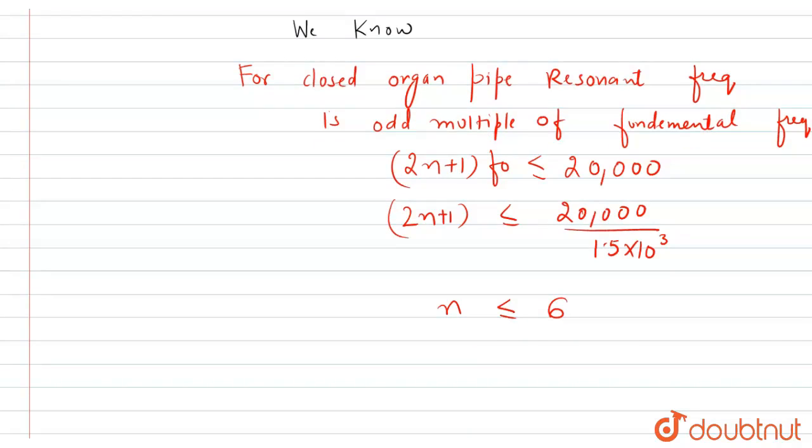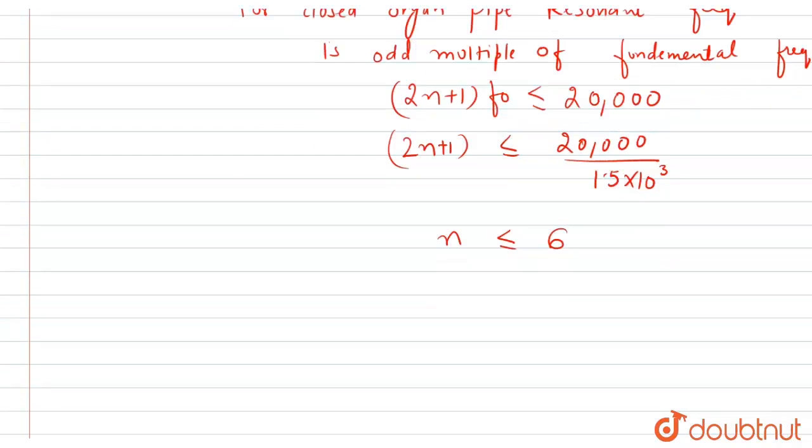So it means the total number of overtones will be equal to, the overtones can be 0, 1, 2, 3, 4, 5, and 6. So total number of overtones are 7.